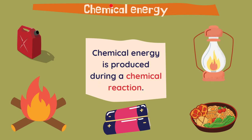Let's go now to chemical energy. Chemical energy is produced during a chemical reaction. For example, burning this wood, you transform the wood into ashes and fire — that's the chemical reaction. Also, these batteries or the food: when you eat food, you obtain energy with a chemical reaction in your body.